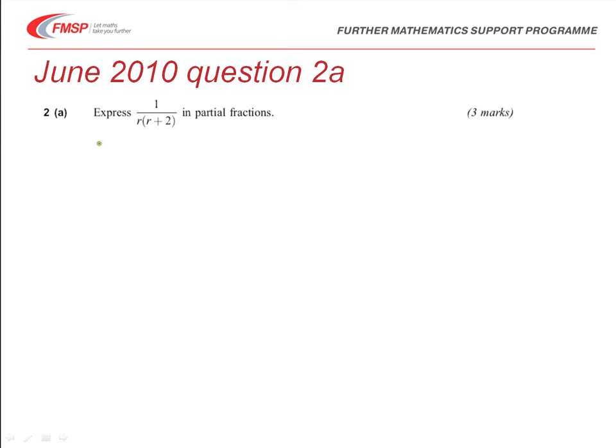This is very much of a standard technique that you would know from your core maths. So we know then that 1 over r(r+2) is going to be expressed as two separate fractions.